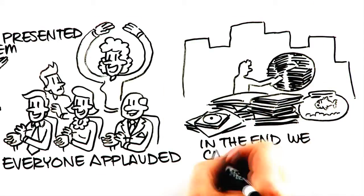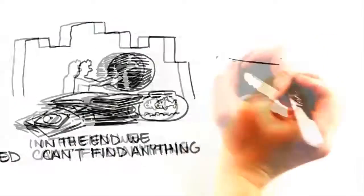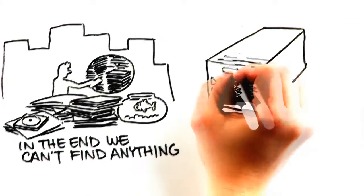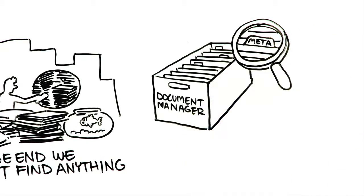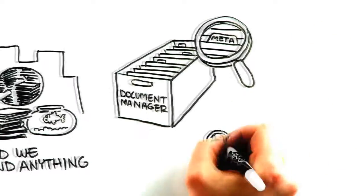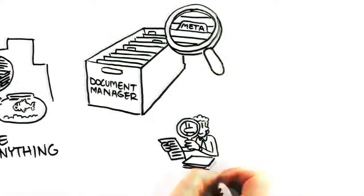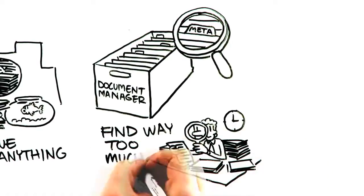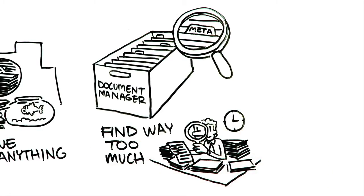In the end, we can't find anything. We put it in a document manager, which lets us search by keyword and meta tag. But then you find way too much, and you have to read reports all night to figure out what your organization already knows that matters to you at this moment.